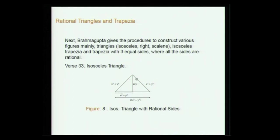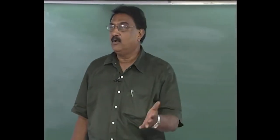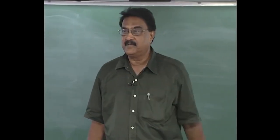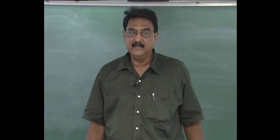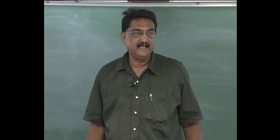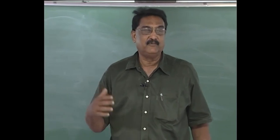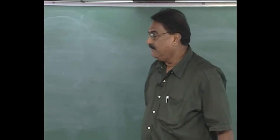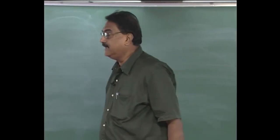If you take the right triangle: one side is x²−y², the other side is 2xy, and the diagonal (hypotenuse) is x²+y². This is used to construct Pythagorean triplets. By using integral values for x and y you can get various triples — 3, 4, 5 and various others.